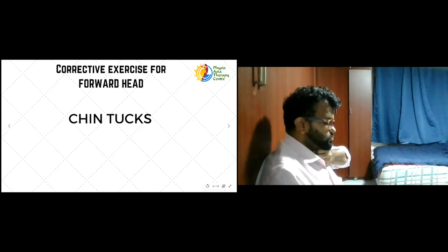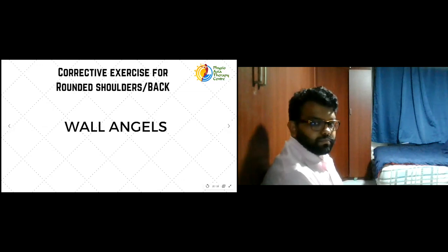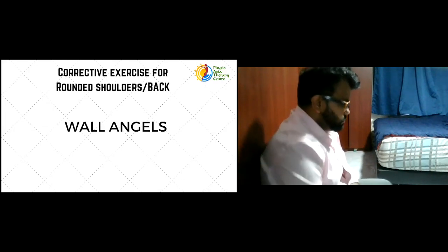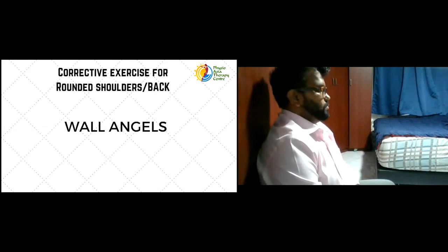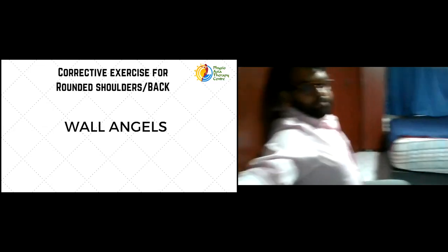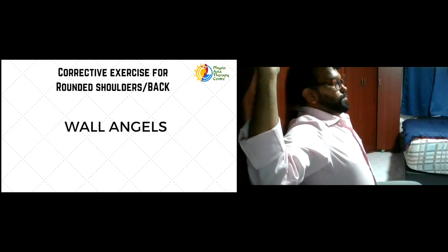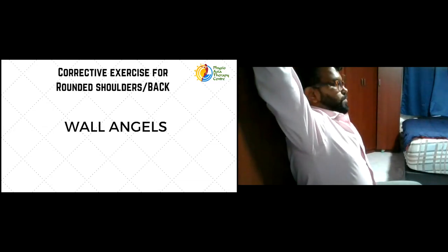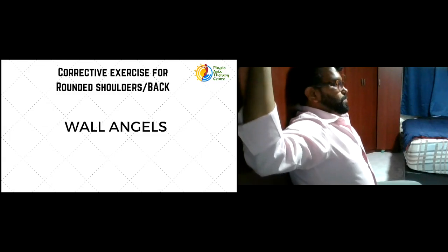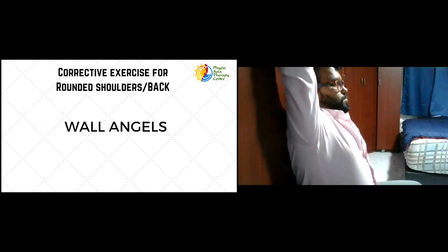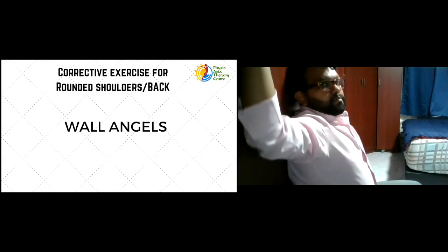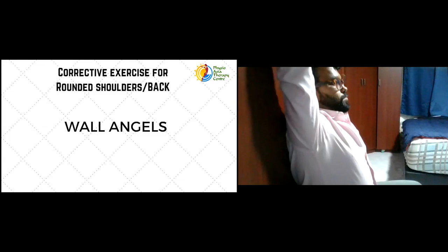The next corrective exercise is for rounded shoulders or rounded back — we call this the wall angel. Sit against the wall ensuring your upper back, head, pelvis, and hips are in contact with the wall. Raise your shoulders and elbows to 90 degrees, then raise your arms overhead while maintaining contact with the wall. This exercise stretches your chest muscles and strengthens your mid-back muscles. Do this 10 times for two sets, at least twice daily.